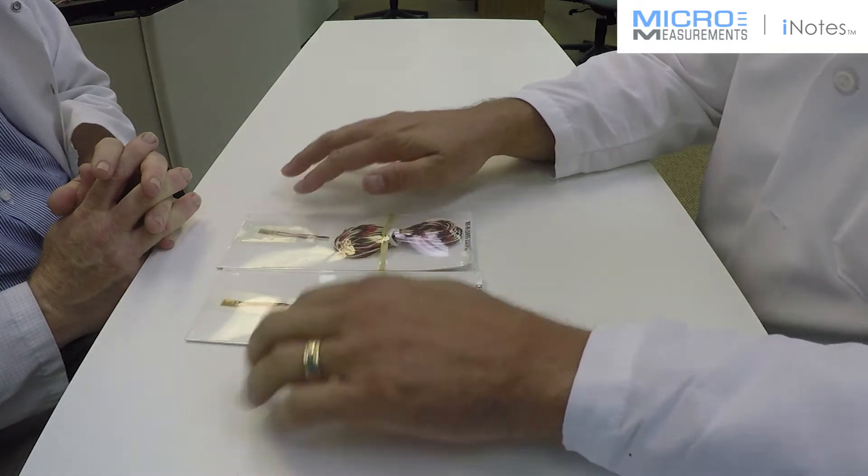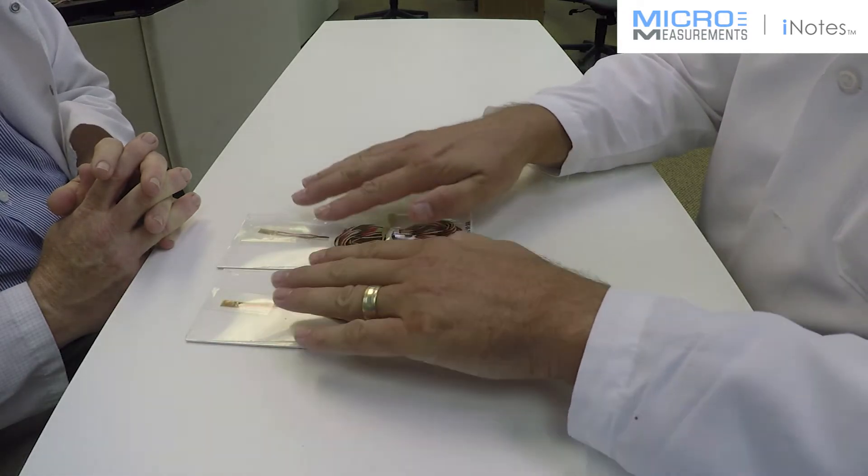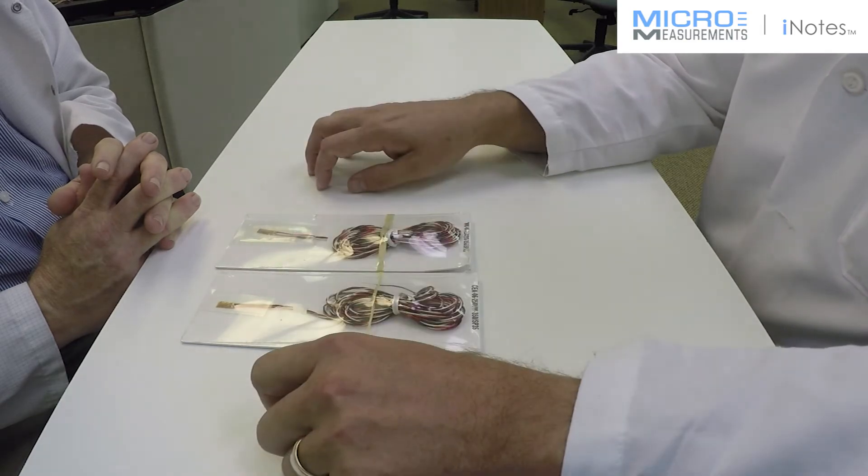And now we've got a solution for you where you can take a strain gauge that's already got the wires on it, just focus on getting them glued in place and then getting them coated. But the tough work of putting the leads on is already done for you.